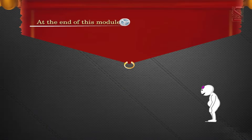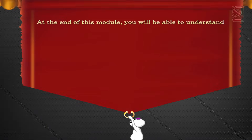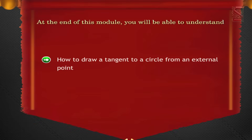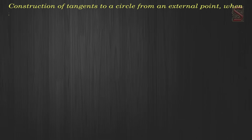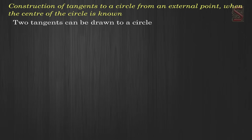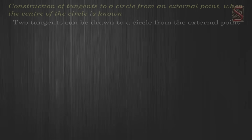At the end of this module you will be able to understand how to draw a tangent to a circle from an external point. Construction of tangents to a circle from an external point: when the center of the circle is known, two tangents can be drawn to a circle from the external point.